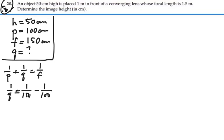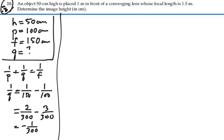which I could write as 2/300 minus 3/300, or a negative 1/300. So Q is equal to negative 300 divided by 1, or Q is a negative 300 centimeters.